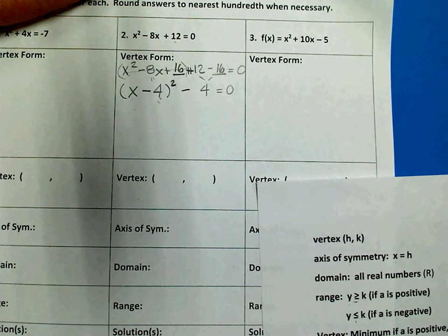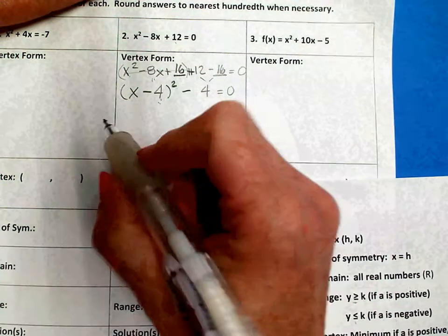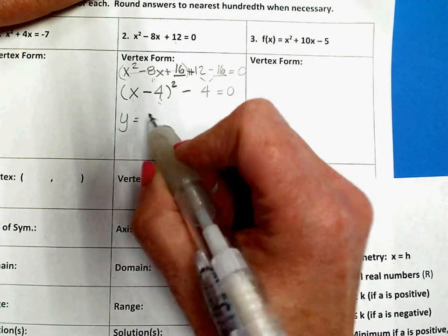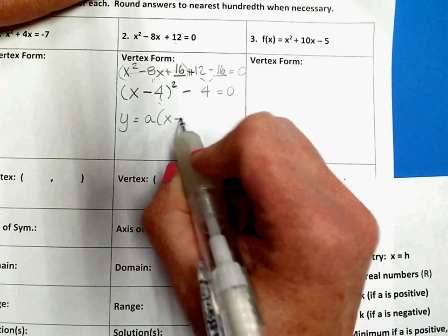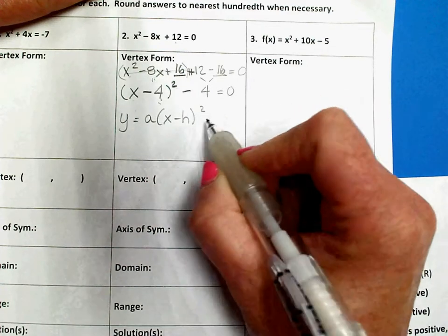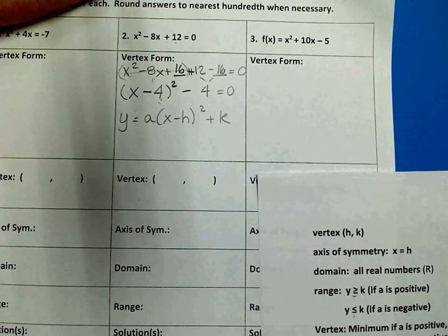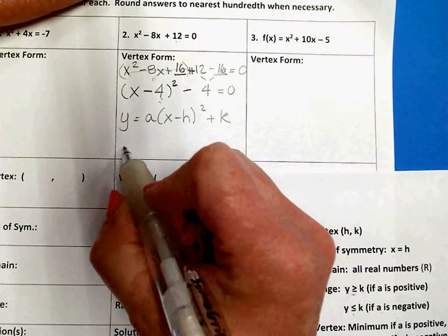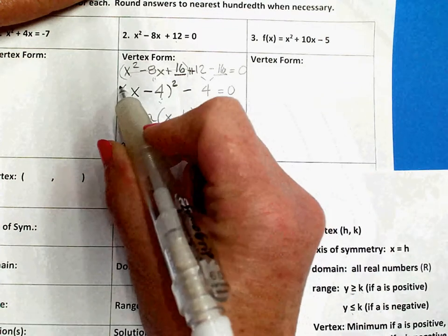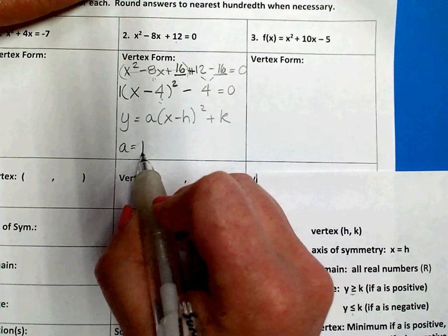This is my answer for vertex form, because it's in this form: a times (x minus h) squared plus k. Now, you can look at this and see that your value of a is the understood 1 that's in front of the parentheses.